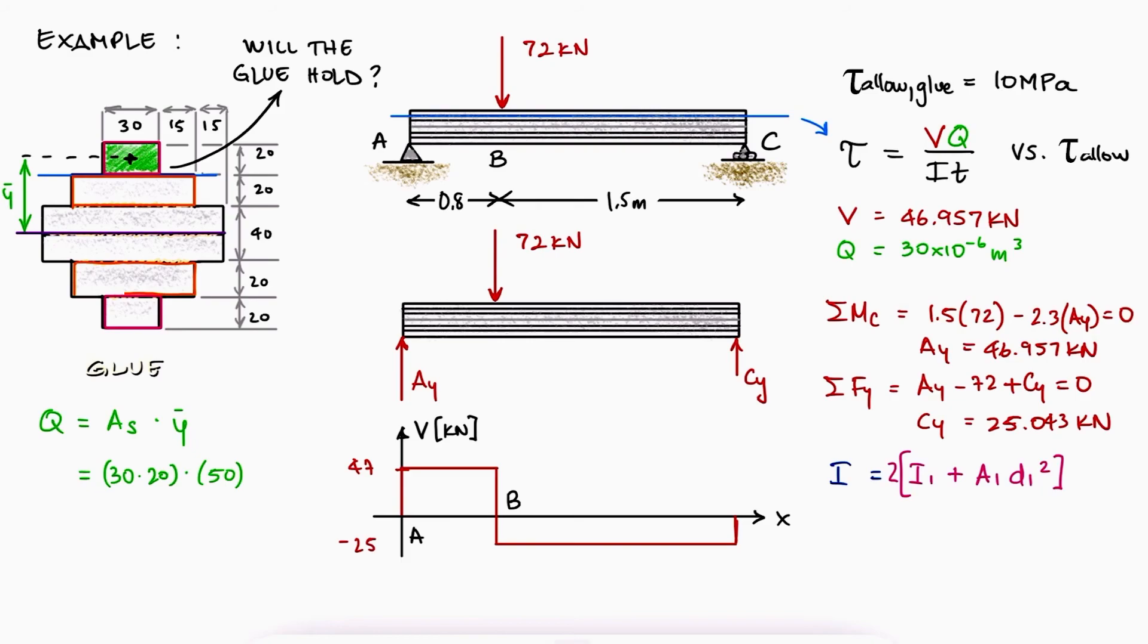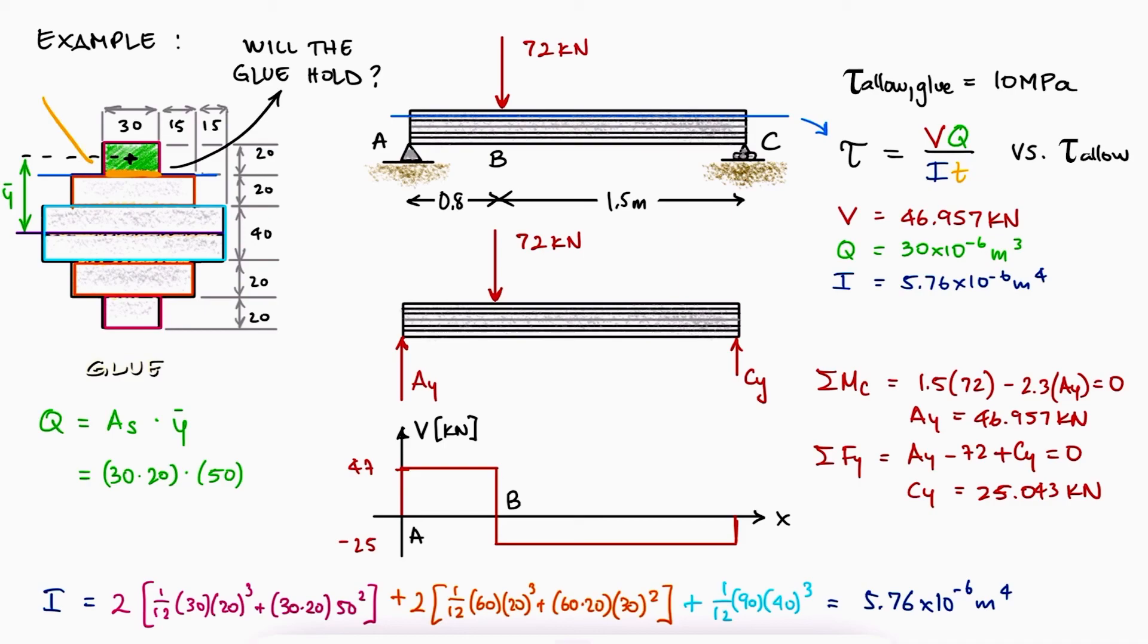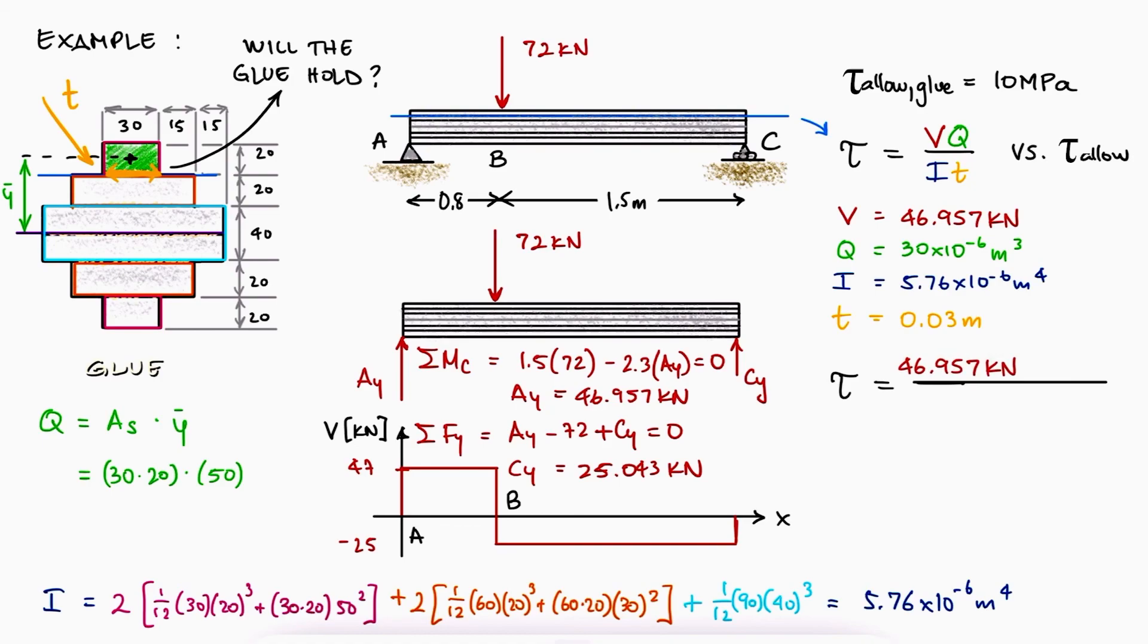The second moment of area I can be calculated using the parallel axis theorem and adding three I's together. If you need a refresher on second moments of area or the parallel axis theorem, I'll leave two links to videos where these are explained in detail in a very short amount of time. The thickness t at that location would be the base of the top plank. Substituting these values, we find a transverse shear stress of 8.15 MPa.